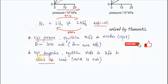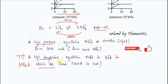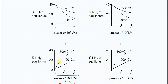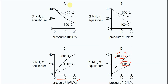We are quite sure that at high temperature, the equilibrium will shift to the left and ammonia formation will be lesser. So if we compare different temperatures in these graphs, the lower temperature — 400°C — must have a higher yield compared to 500°C. This means you should choose either A or D.